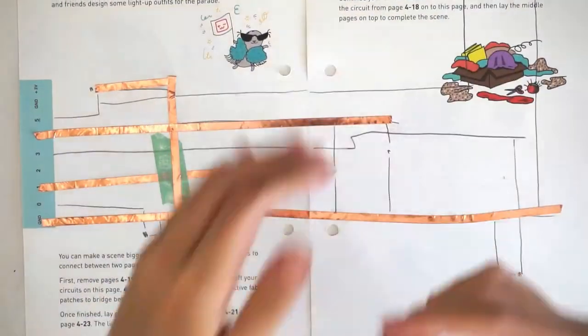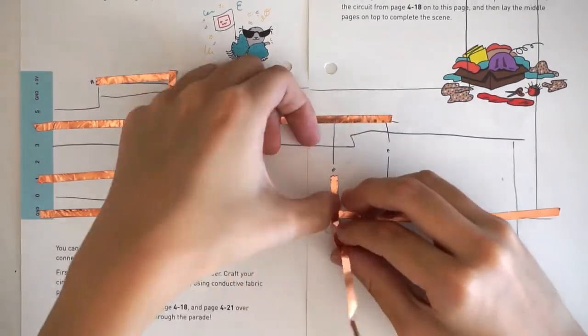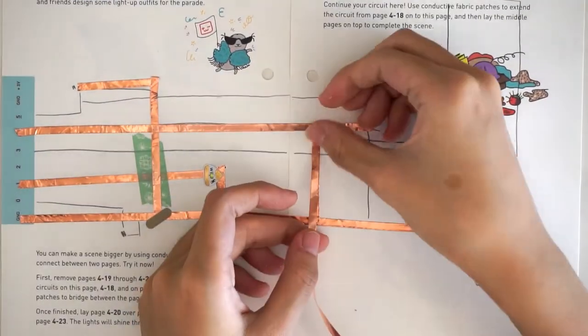Let's do another LED. First, we run the copper tape, and then add a fabric tape patch over the T-junctions.